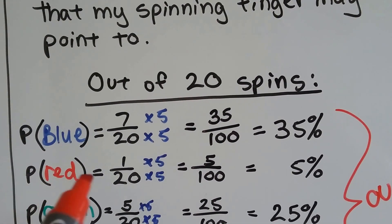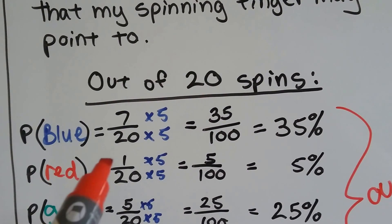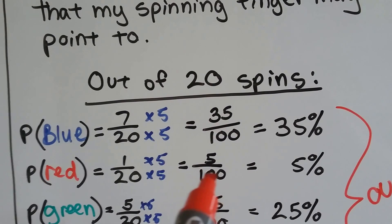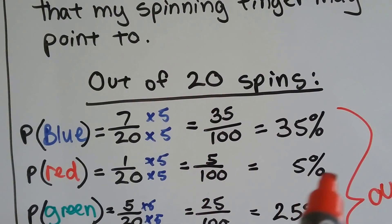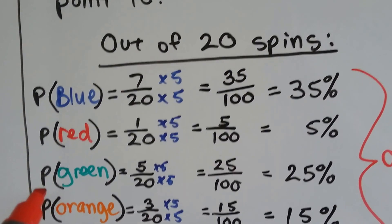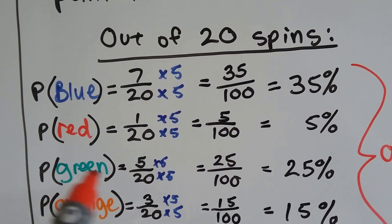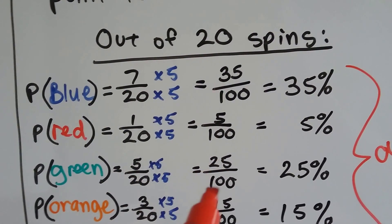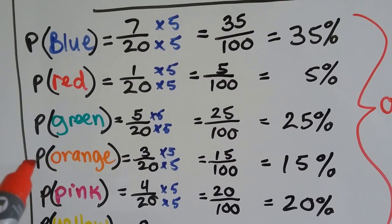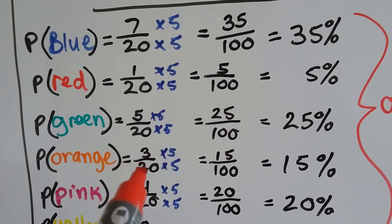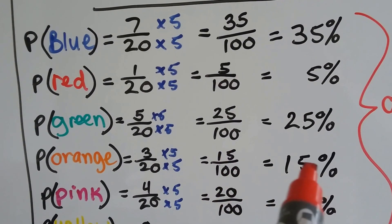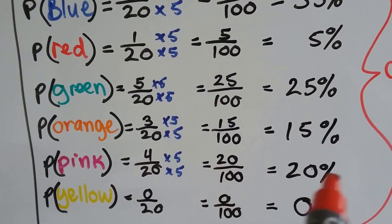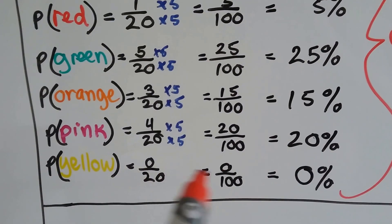For the P for the red, the probability for the red, it landed on it one time, and I multiplied that by five to get 100, and I got 5 over 100, which was 5% of the time. The P green, the probability green, was 5 over 20, which became 25 over 100, or 25% of the time. Probability orange, three times out of the 20, or 15%. Probability pink was four times out of 20, or 20% of the time. And yellow was zero, 0% of the time.